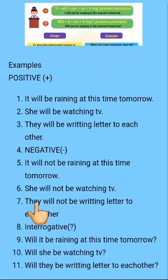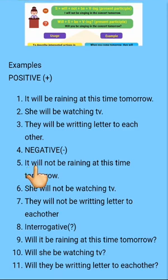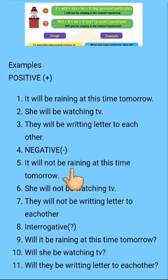For the negative sentences, ashi not use karna hai simply. It will not be raining at this time tomorrow. It saada subject hai, then ashi will use karna hai according to rule, then not use karna hai because in negative sentences haan. According to rule, naal be use karna hai, then verb di first form rain hai, naal ashi usde ing use karna hai, then saada sara object aagya.